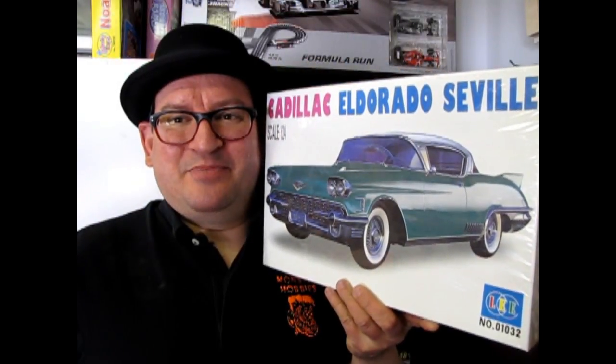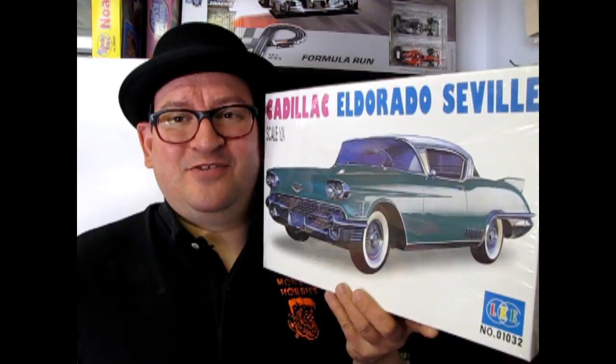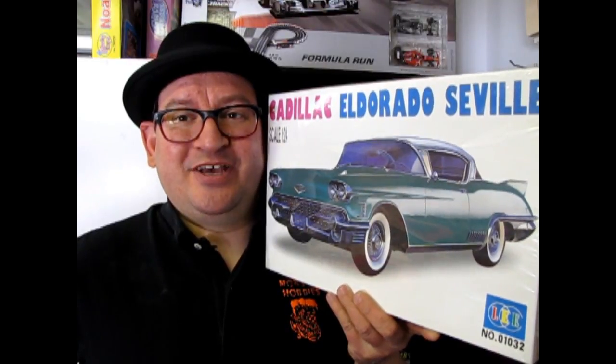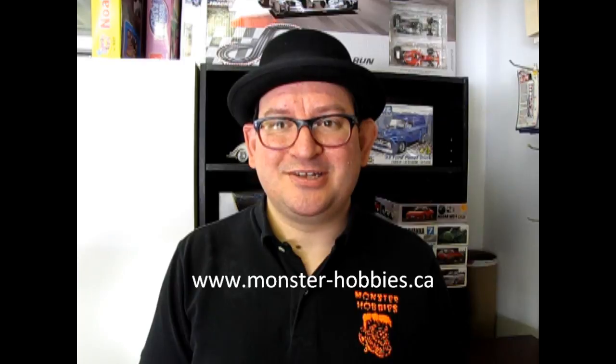Well, I hope you enjoyed this episode of Monster Hobbies What's in the Box where we got to look at the 1958 Cadillac El Dorado Seville by Lee. Now, if you would like to see some other cool model kits from the golden age of automobiles, please don't hesitate to check out our website at www.monster-hobbies.ca.